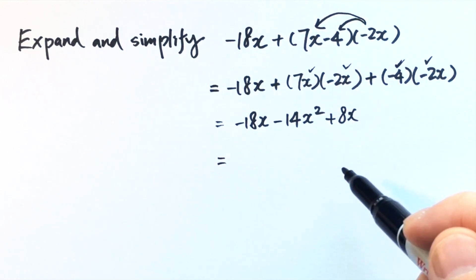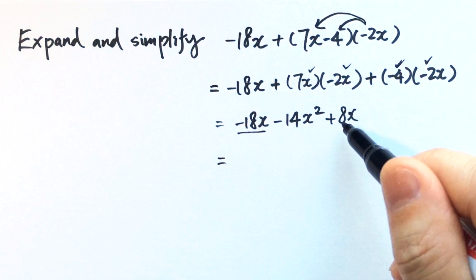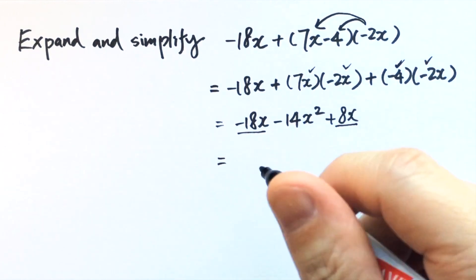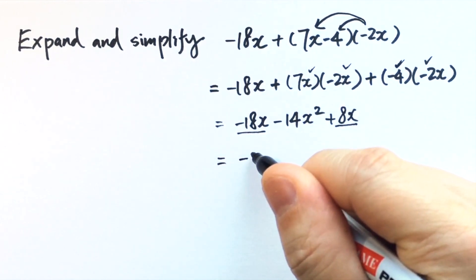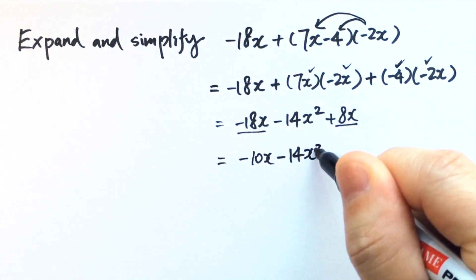Now we can further simplify. We have like terms: negative 18x plus 8x. You get negative 10x minus 14x squared.